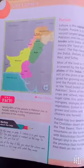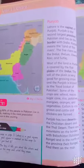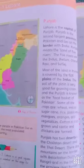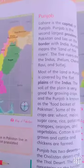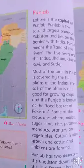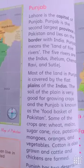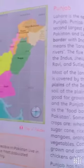Dear students, do you know what is the meaning of Punjab, where it is located, how many rivers, deserts and mountain ranges it has? Let's find out the answers through the map.